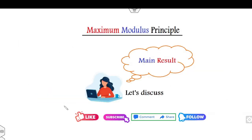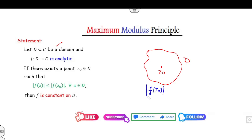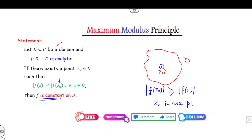Now let's discuss the main result of the Maximum Modulus Principle. If f is analytic on a domain D, and z₀ is any point inside the domain such that |f(z₀)| ≥ |f(z)| for all other z — meaning z₀ is a maximum point — but it lies inside the domain, then the function is constant. As mentioned, whenever you consider a non-constant function the maximum value only occurs at the boundary. If the maximum occurs at an interior point, the function is always constant.